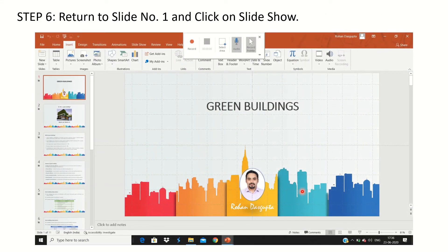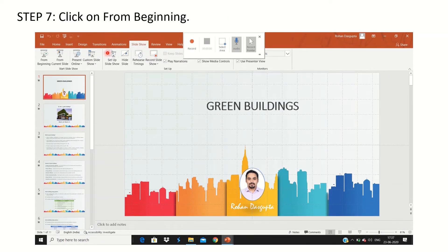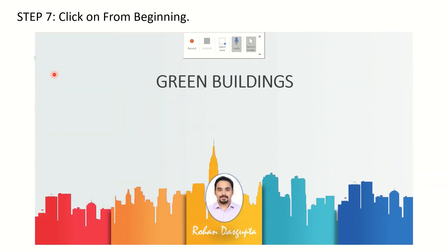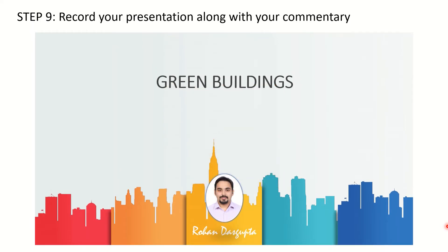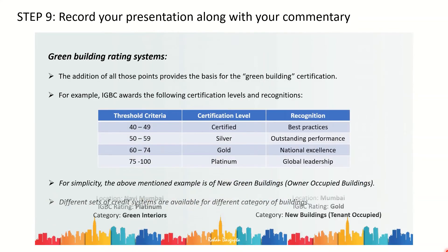Return to slide one and click on Slideshow, then click From Beginning to open your slide in full page. After this, click on Record. It will give you a three-second countdown, after which three recordings will start simultaneously: the screen will get recorded, your audio will get recorded, and your pointer will get recorded. Then start giving your presentation slide by slide.